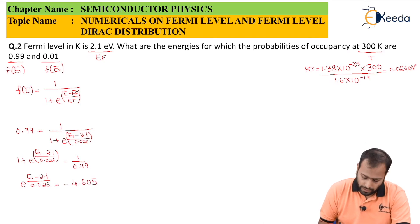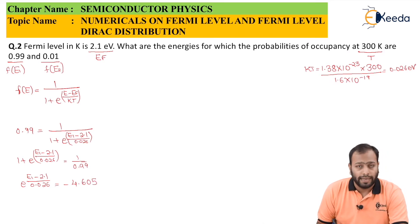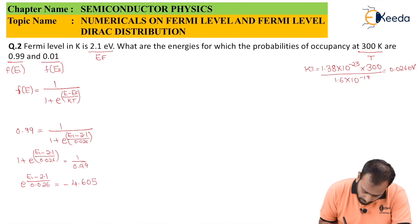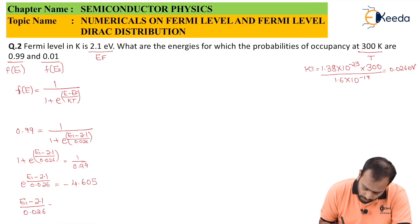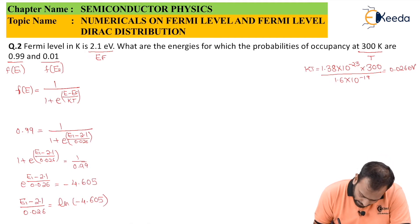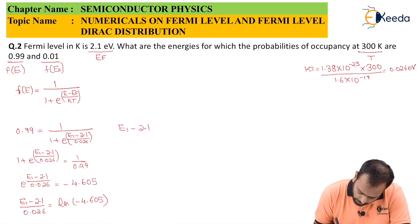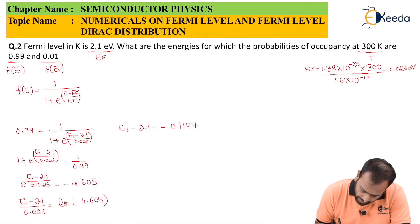Taking ln on both sides: (E1 − 2.1)/0.026 = ln(0.0101) ≈ −4.605. Solving further: E1 − 2.1 = −0.1197. Therefore, the value of E1 is 1.98 electron volts.